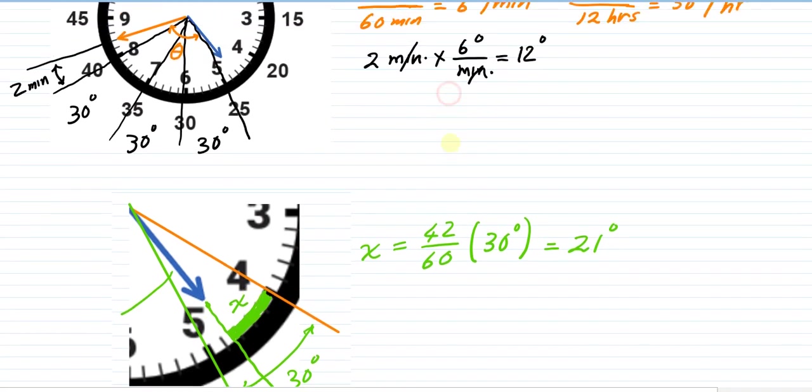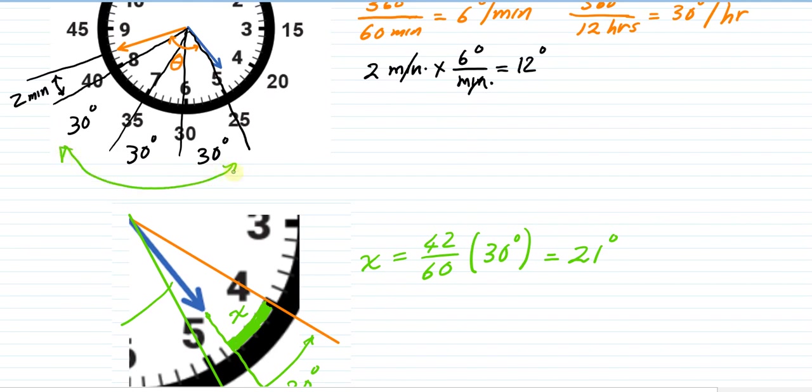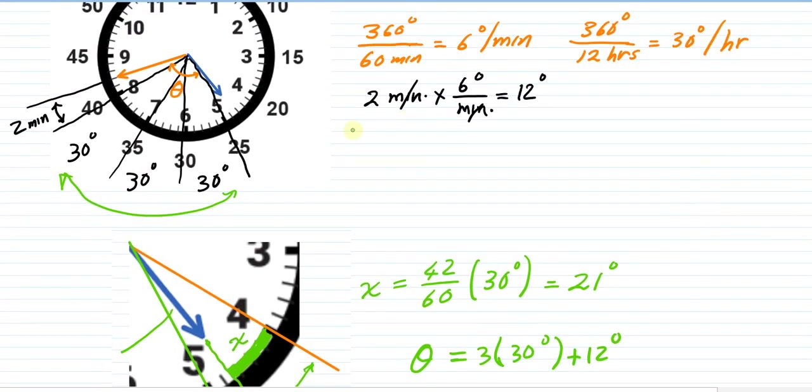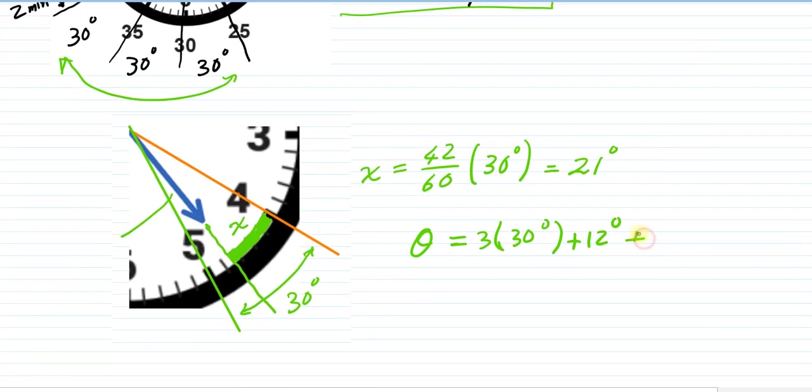Now we can put all of this together. Remember, we already have these three measures, so the total measure of the angle theta is going to be 3 times 30 degrees, plus 12 degrees for the two minutes past 40, plus the measure between the hour hand and 5 o'clock. If this whole thing is 30 and X is 21, this is actually 9 degrees. So I'm going to add another 9 degrees, and the total is 90 plus 12 plus 9, or 111 degrees.